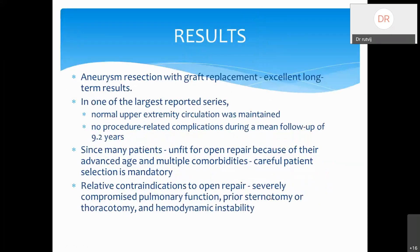Aneurysm dissection with graft replacement has excellent long-term results. In one of the largest reported series, normal upper extremity circulation was well maintained with no procedure-related complications during a mean follow-up of nearly 10 years. Since many patients are unfit for open repair due to advanced age or multiple comorbidities, proper patient selection and optimization is imperative. Contraindications to open repair include severely compromised pulmonary function, prior sternotomy or dissection of that area, and hemodynamic instability.